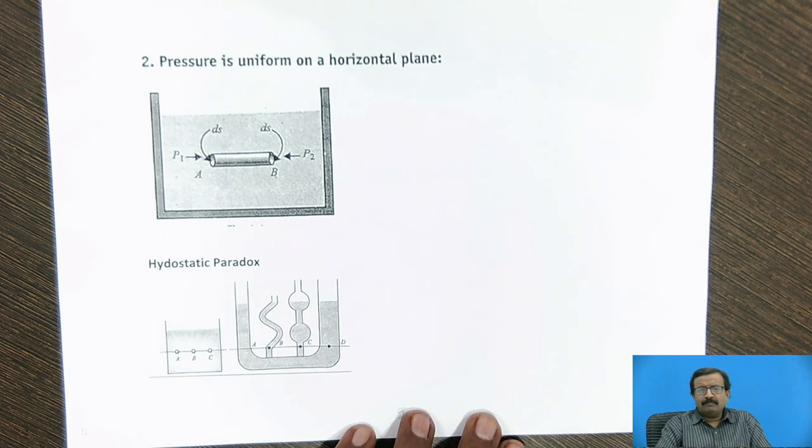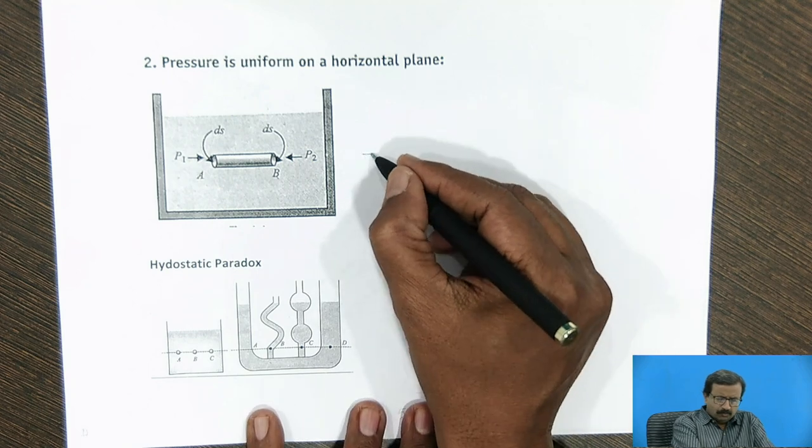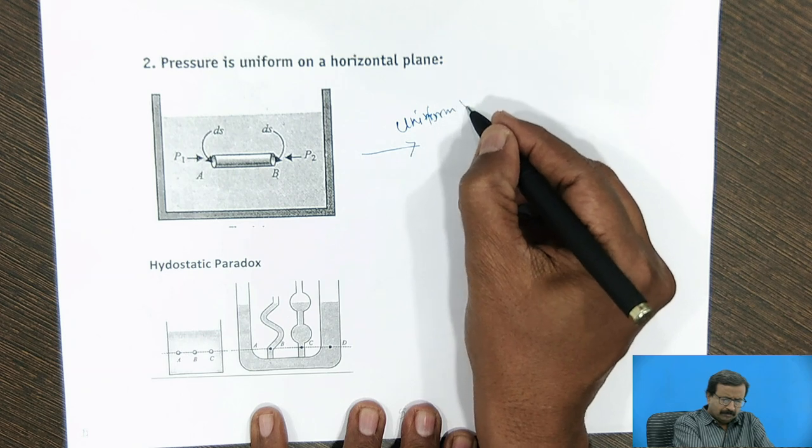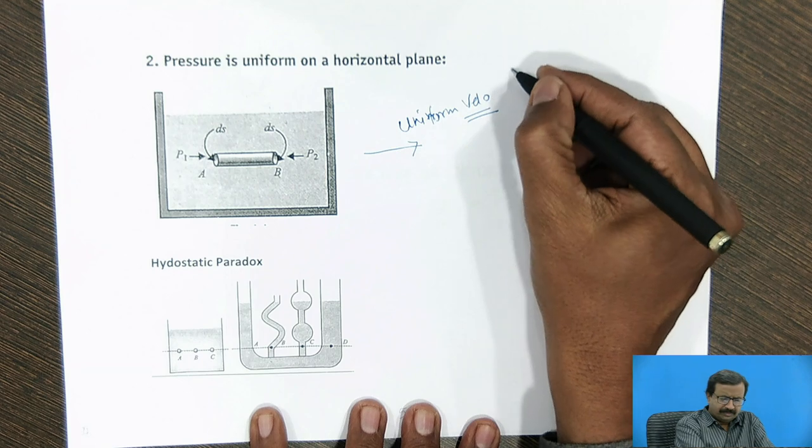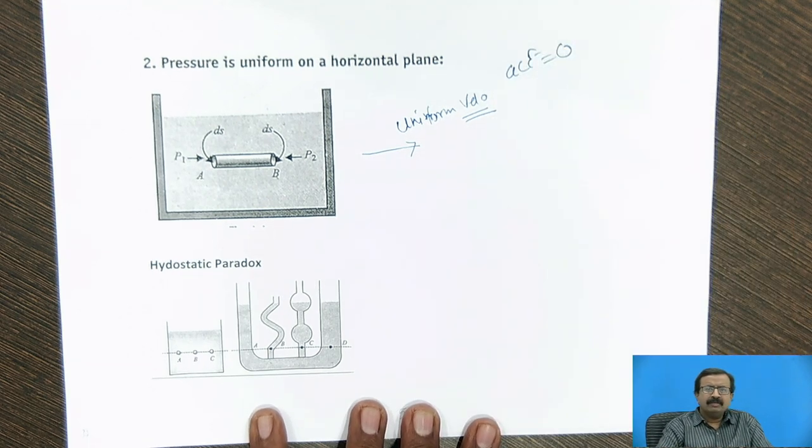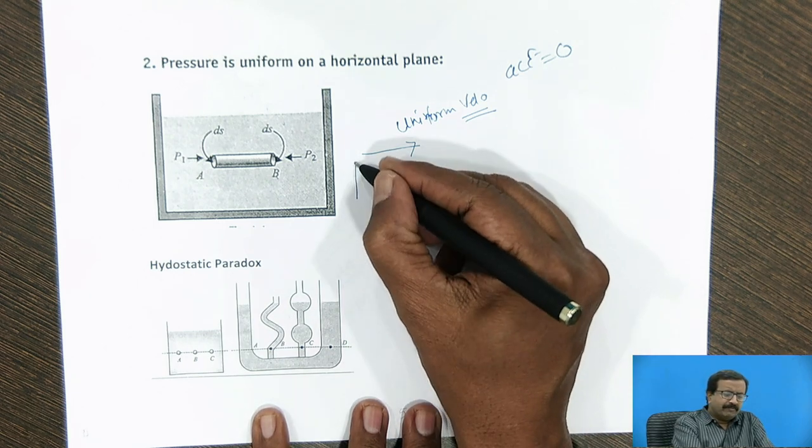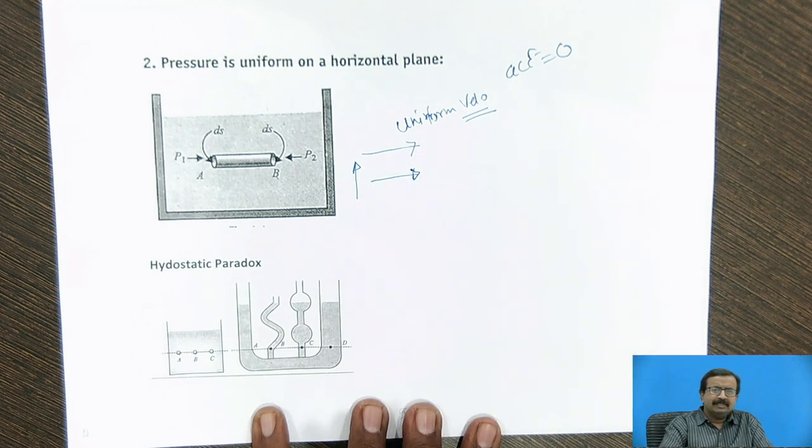Another important thing is pressure is uniform on a horizontal plane. Now this is an important property, and students have confusion regarding the same pressure along the horizontal line for two cases. Suppose this body is moving with uniform velocity. Now what is the meaning of uniform velocity? There is no acceleration. Uniform velocity means acceleration is zero. When acceleration is zero, by Newton's law, we can say that there is no external force acting on the system.